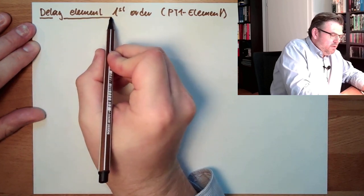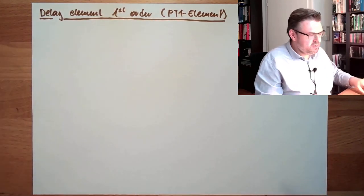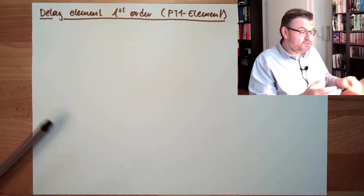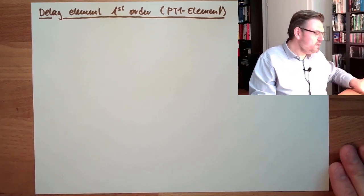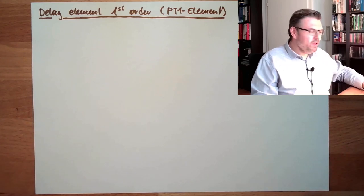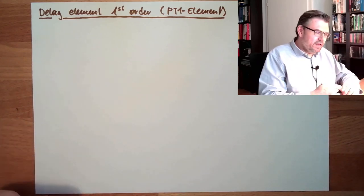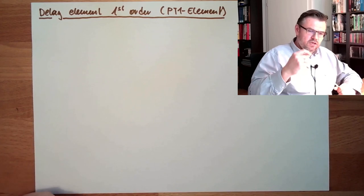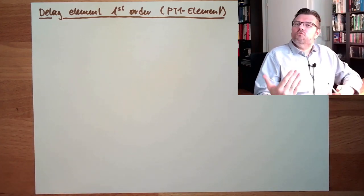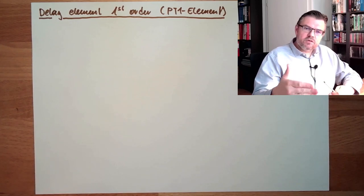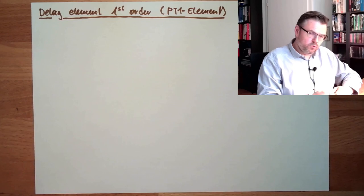P already shows that this is a proportional element, and T1 shows it's a first order delay element. A first order delay element is a system which contains one major energy storage, and this energy storage needs to be filled up before we can see the reaction at the output.